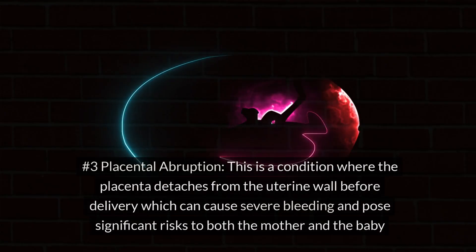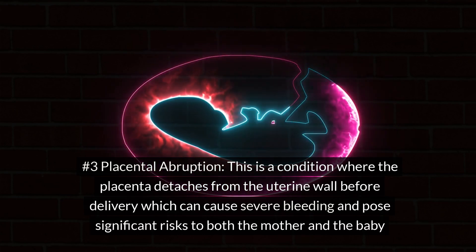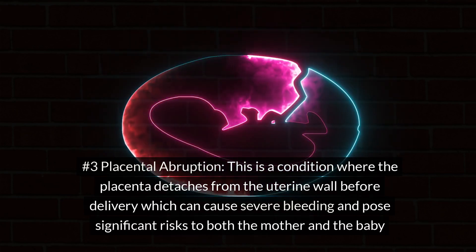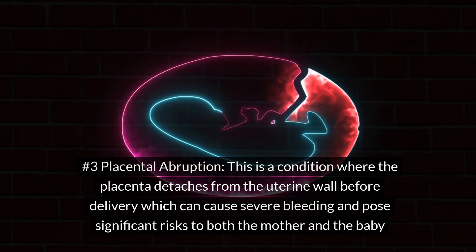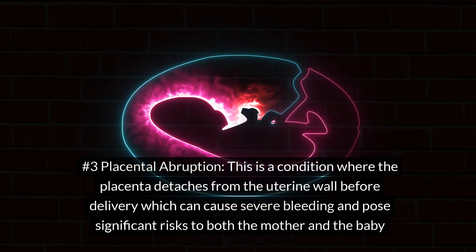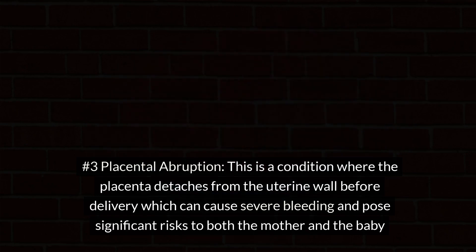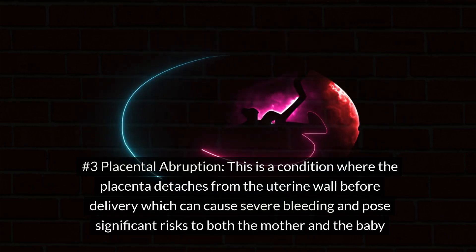Number 3: Placental abruption. This is a condition where the placenta detaches from the uterine wall before delivery, which can cause severe bleeding and pose significant risks to both the mother and the baby.